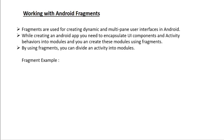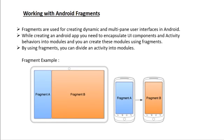Here is an example to help you understand what a fragment is and its actual use in an Android application. We have two screen sizes: a large screen and a standard screen size. We have a single activity on both screen sizes, but we divide that single activity into two modules — Fragment A and Fragment B. On a large screen, we display both modules at the same time, but on a small screen, we display one module at a time, and the user has to click Fragment A to open Fragment B.